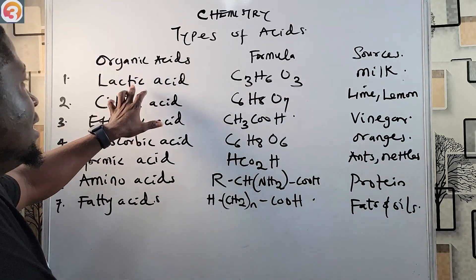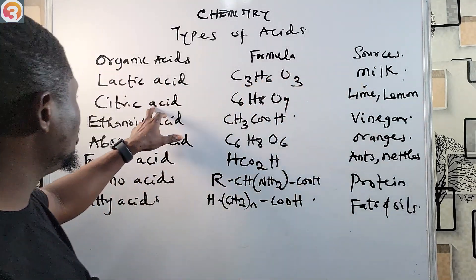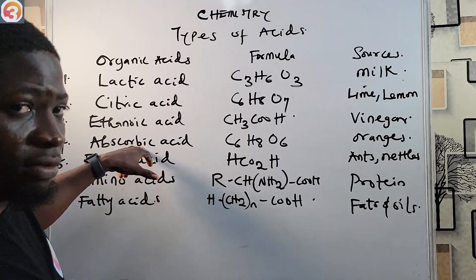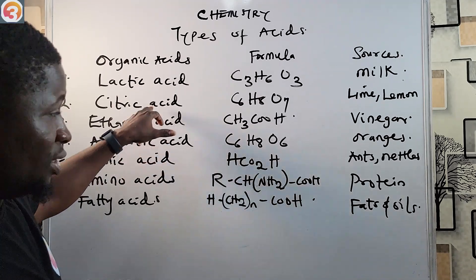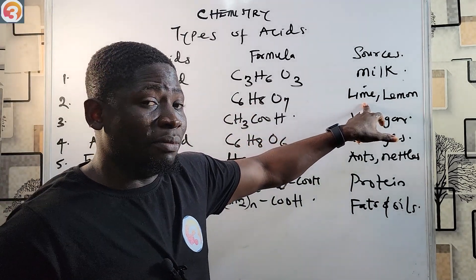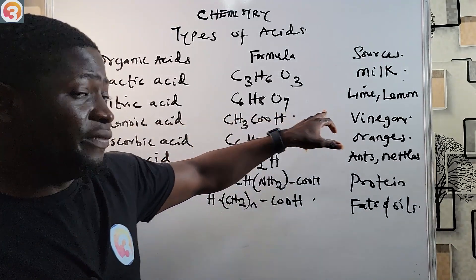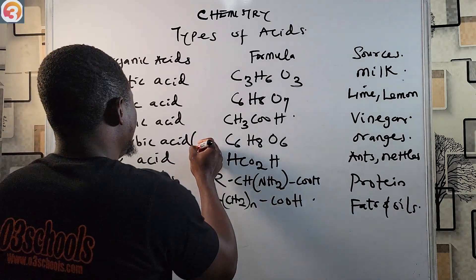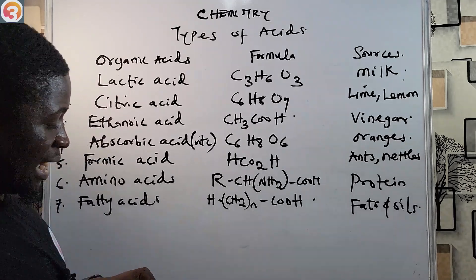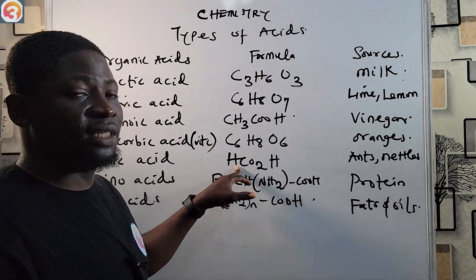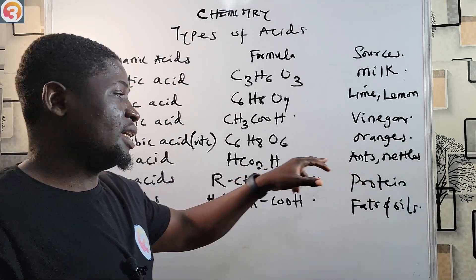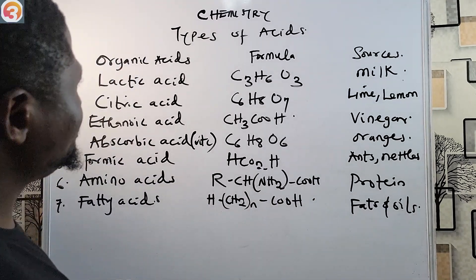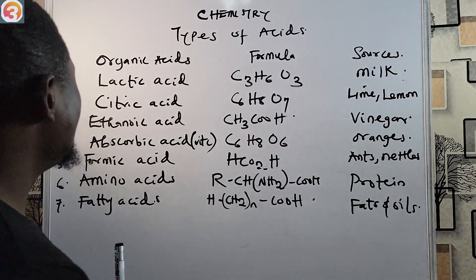To summarize the organic acids: lactic acid from milk; citric acid from lime or lemon; ethanoic acid from vinegar; ascorbic acid (vitamin C) from oranges; formic acid (HCOOH) from ants or nettles; amino acids from protein; and fatty acids from fats and oils.